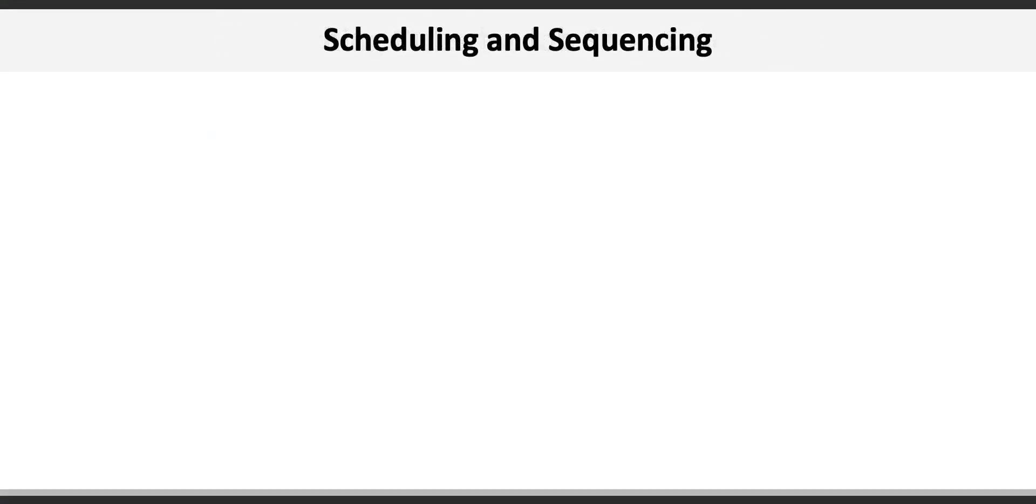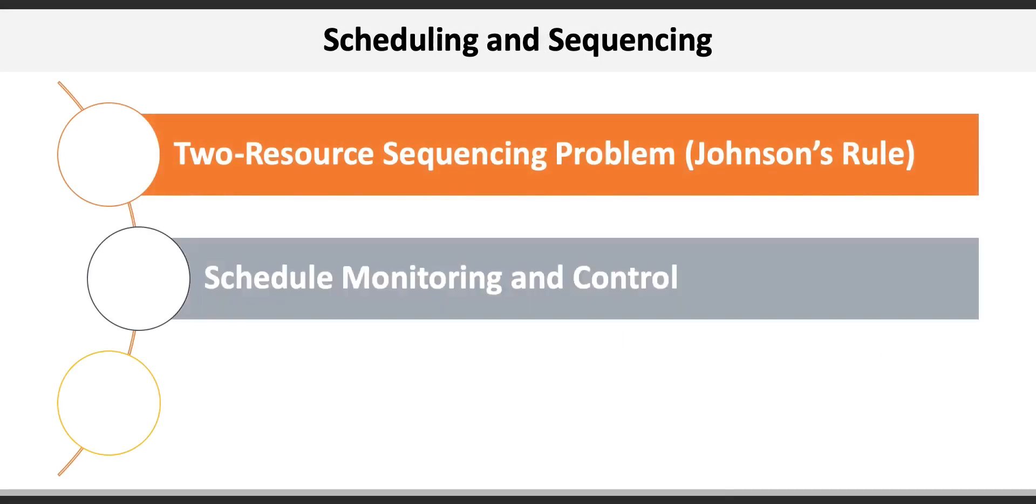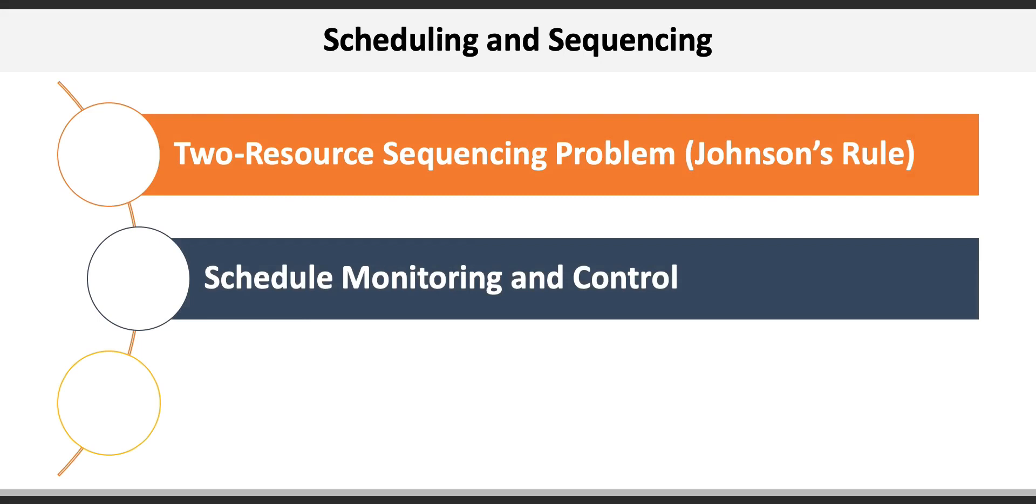Finally, there are three other scheduling and sequencing concepts to consider. They include two-resource scheduling problems that can be solved using Johnson's Rule. Another consideration is schedule monitoring and control.